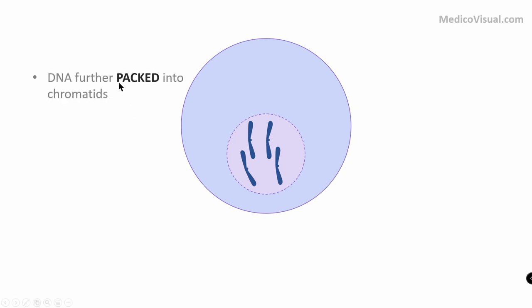This first phase of mitosis in which DNA is further condensed and packed up is called prophase. P for packed — P for prophase. Easy.